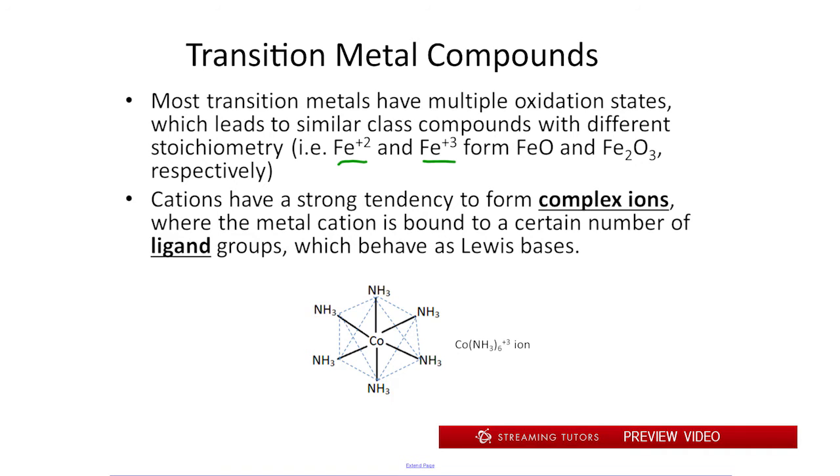So briefly, what a complex ion is, is just a metal cation center and attached to it are what's called ligands.